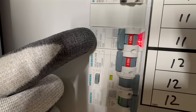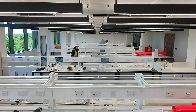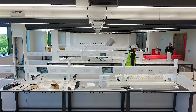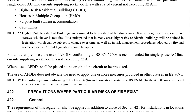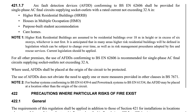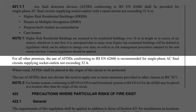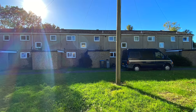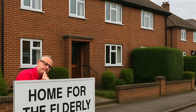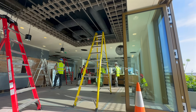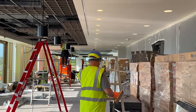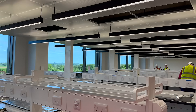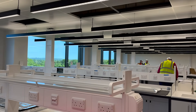Well, no. AFDDs aren't a regulatory requirement for this type of commercial install, but they are recommended under regulation 421.1.7 of BS 7671. This regulation advises the use of AFDDs to reduce the risk caused by arc faults in final circuits with a current not exceeding 32 amps, particularly in higher-risk residential buildings, houses in multiple occupation, purpose-built student accommodation and care homes. The designers on this commercial install have chosen to fit them on all socket outlets due to the sensitive nature of the equipment and the superior protection offered by AFDDs.